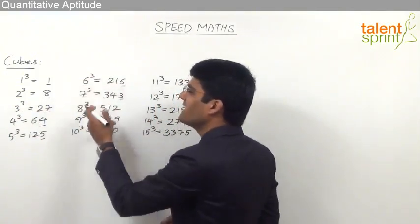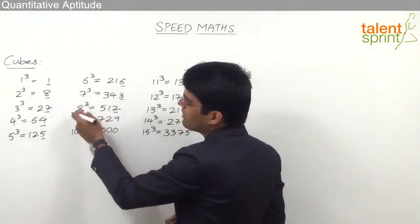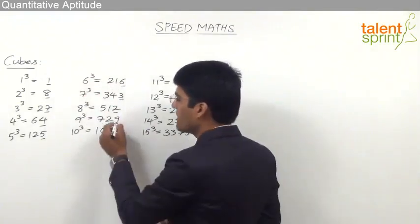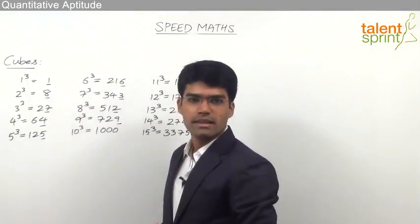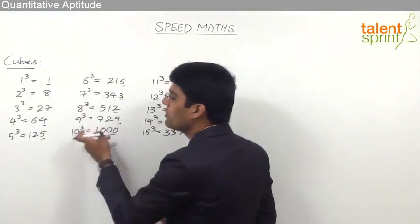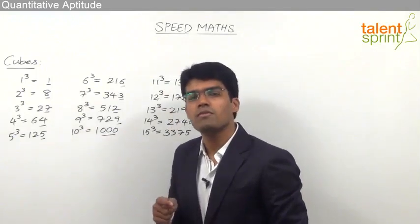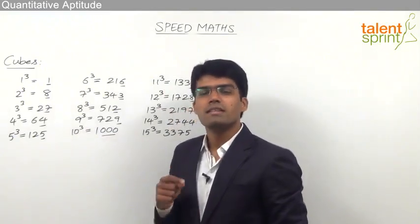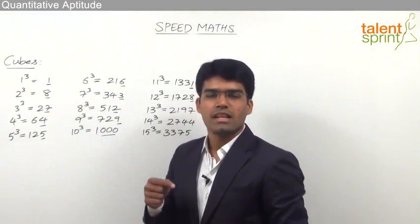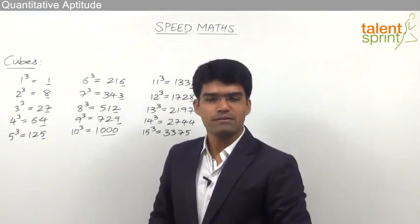When a number ends with 3, cube root ends with 7. When a number ends with 2, cube root ends with 8. When a number ends with 9, cube root ends with 9. And when there are 3 zeros, the cube root ends with a 0. Remember, in a perfect cube we should have 3, 6, or 9 zeros — that means the number of zeros must be multiples of 3.